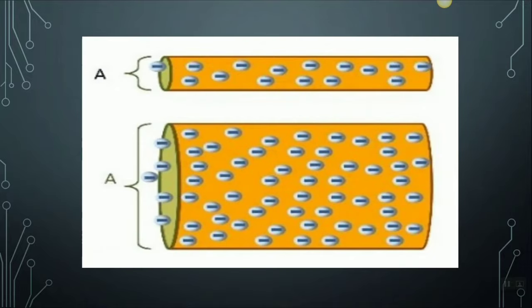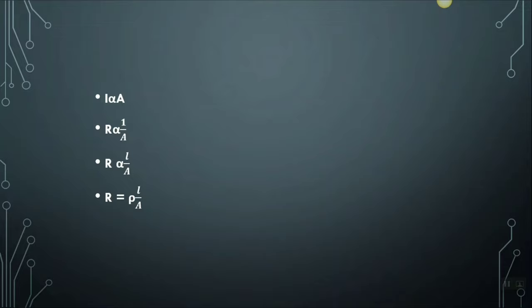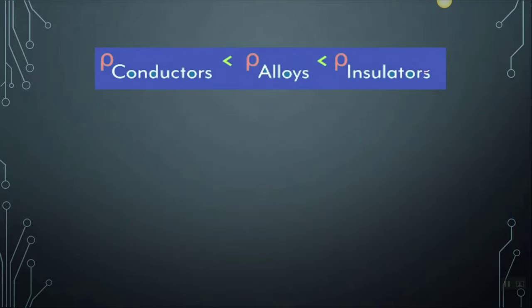The third case tells us that as the thickness of the wire increases, the current flowing through it also increases. This implies that the current is directly proportional to the cross-sectional area of the conductor, which means resistance is inversely proportional to the cross-sectional area. So resistance is directly proportional to the length of the conductor and inversely proportional to the cross-sectional area. If we introduce the constant rho, this can be written as R = rho × L / A. Rho is the constant of proportionality and is called the electric resistivity of the material. In the fourth case, as the nature of the material changes, the current changes because the electric resistivity also changes. Conductors have lesser electric resistivity than alloys, and alloys have lesser electric resistivity than insulators.